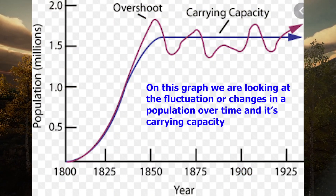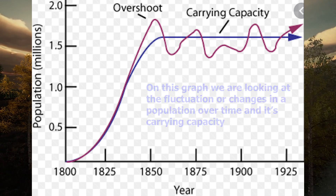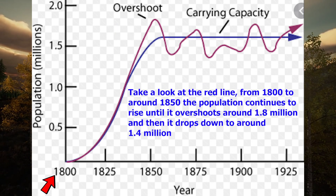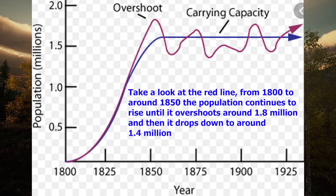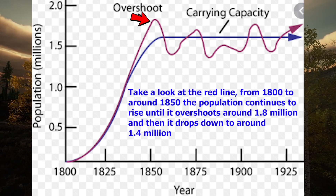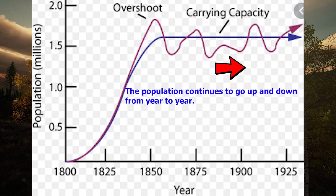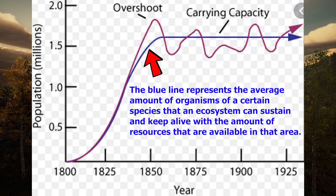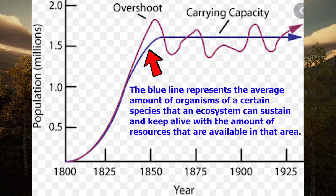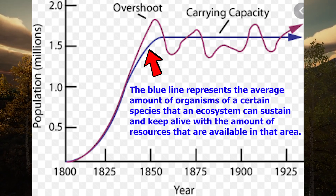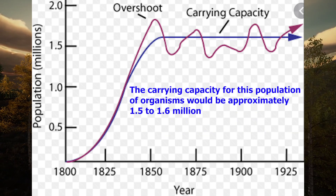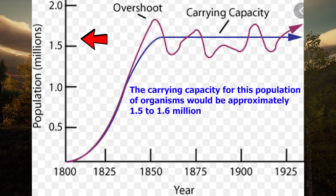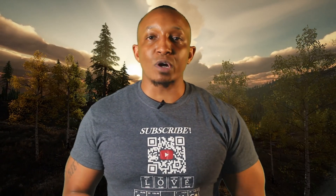Let's take a look at a graphical example of carrying capacity. On this graph, we're looking at the fluctuation or changes in a population over time and its carrying capacity. The red line shows the population rising from 1800 to around 1850, overshooting around 1.8 million then dropping to around 1.4 million, continuing to go up and down. The blue line represents the average amount of organisms that an ecosystem can sustain — the carrying capacity for this population is approximately 1.5 to 1.6 million. Remember, limiting factors affect the carrying capacity of an area.